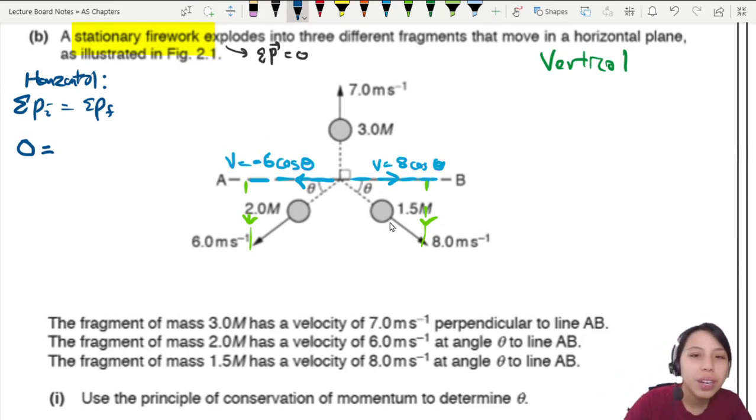After explosion, we have two. We have 8 cosine theta minus 6 cosine theta. Minus because moving opposite direction, one move to the right, one move left. So wait a second, we are missing something here. This one is just velocity. What about the mass?